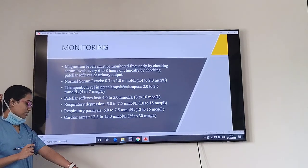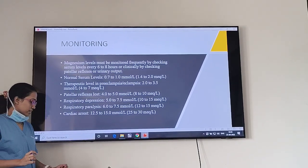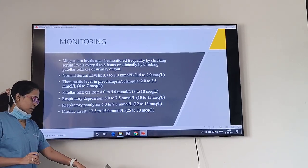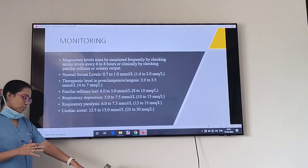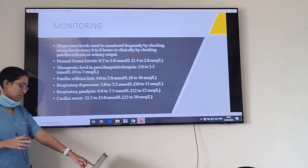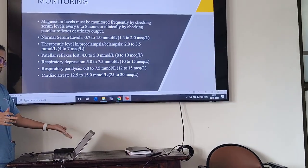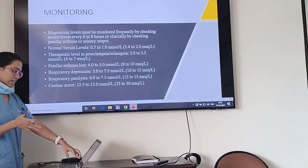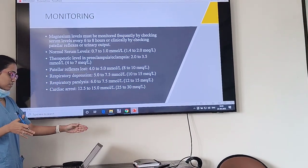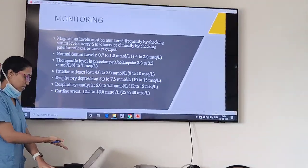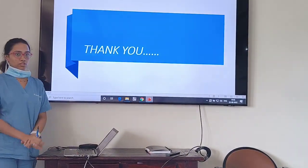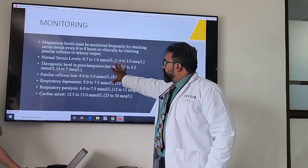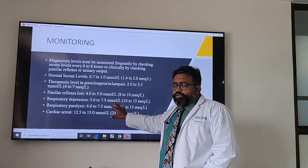Monitoring: MgSO4 should be checked every 6 to 8 hours, or clinically by checking patellar reflexes and urinary output. Normal serum levels are 0.7 to 1 millimoles per litre. Therapeutic levels in preeclampsia/eclampsia should be 2 to 3.5 millimoles per litre. Patellar reflexes are lost when levels are between 4 to 5 millimoles per litre. Respiratory depression occurs at 10 to 15 millimoles per litre. Paralysis at around 15. Cardiac arrest at 12.5 to 15 millimoles per litre. There is a huge amount of leeway before magnesium toxicity comes in.